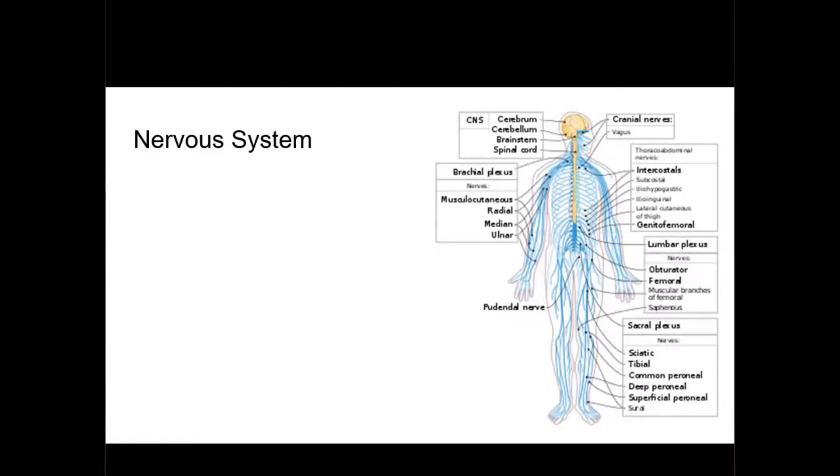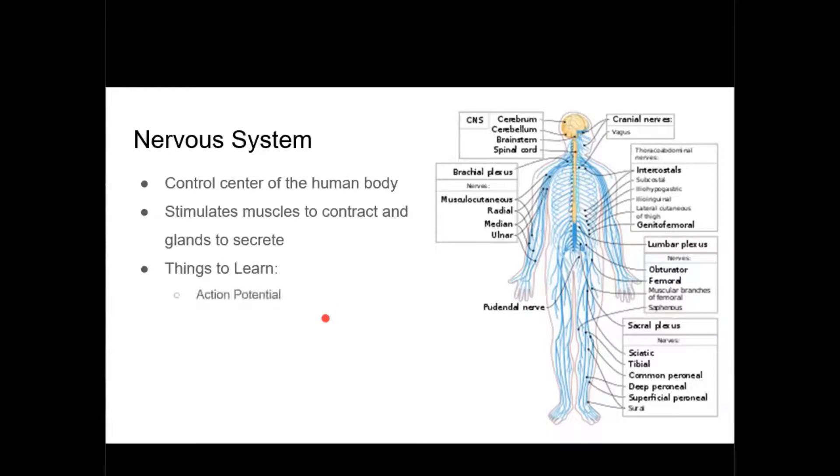Next we're going to talk about the control, the nervous system. The nervous system is the control center of the human body. It uses chemical reactions to stimulate muscles to contract and glands to secrete and other higher-level functions. When going to the TEAS test, you want to know what an action potential is and how neurons use it to communicate. What diseases of the nervous system exist, like Alzheimer's, Parkinson's, stuff like that.